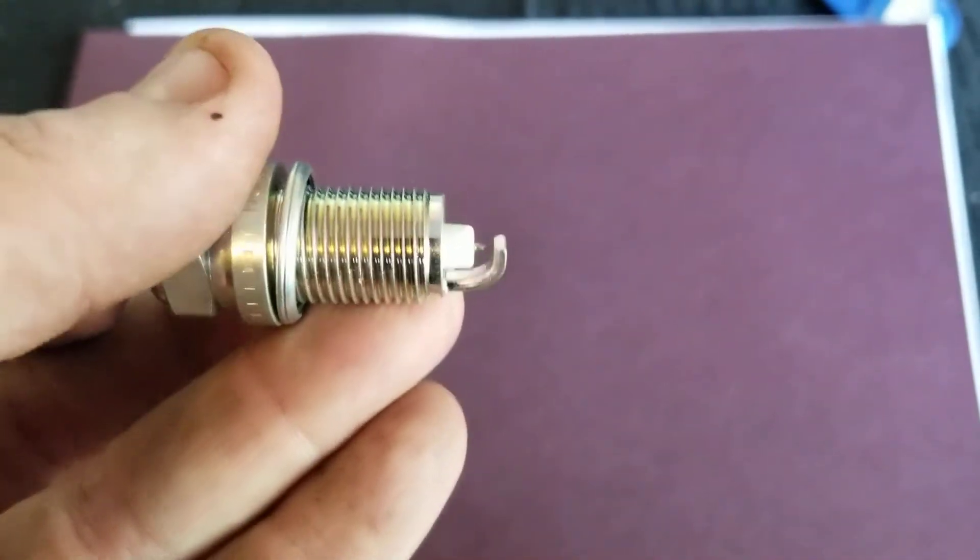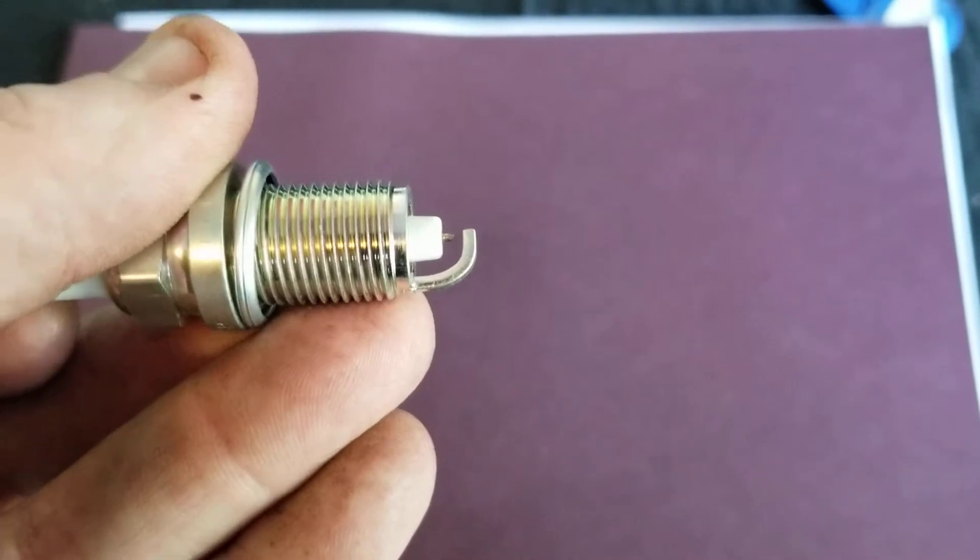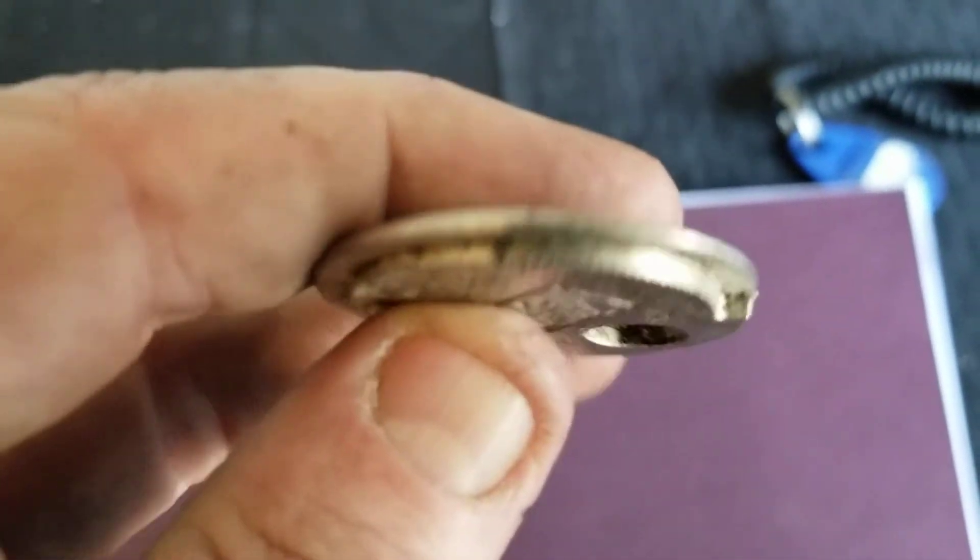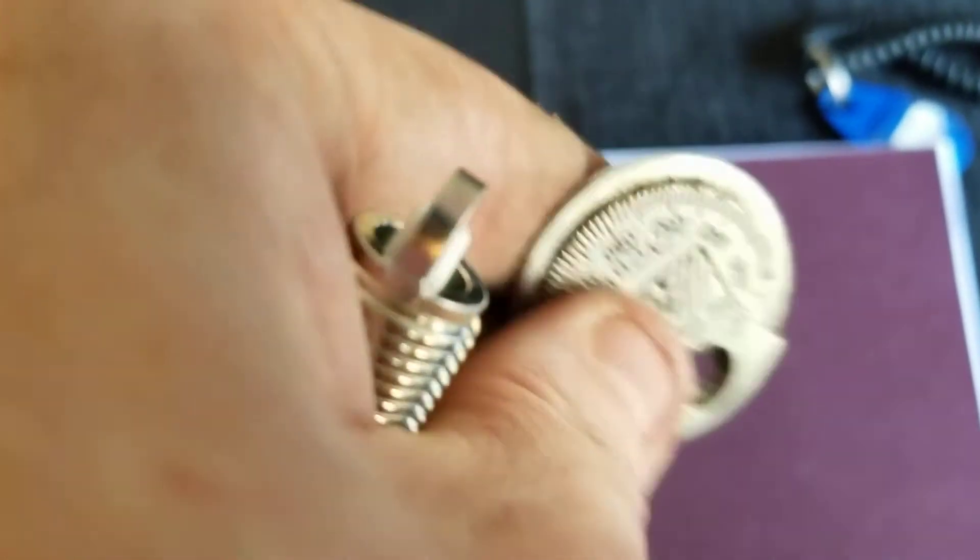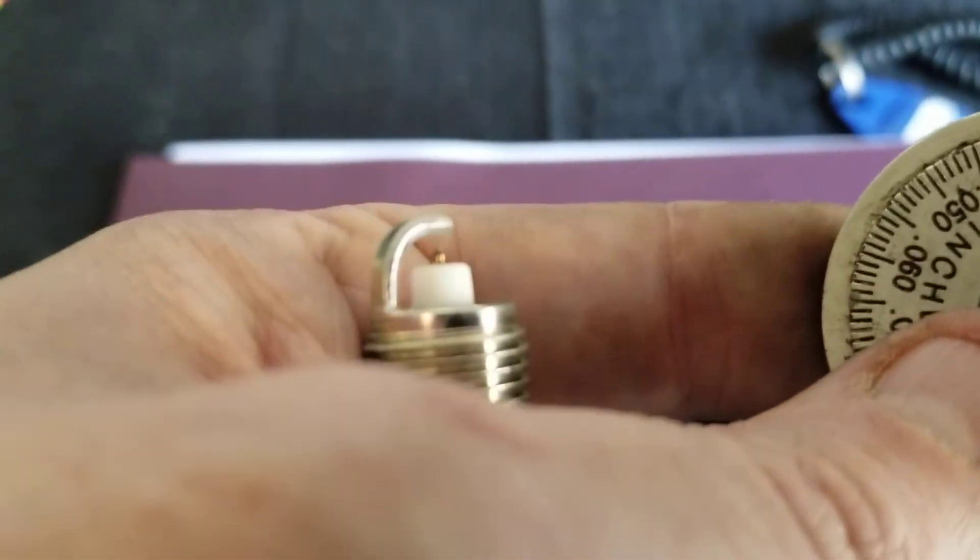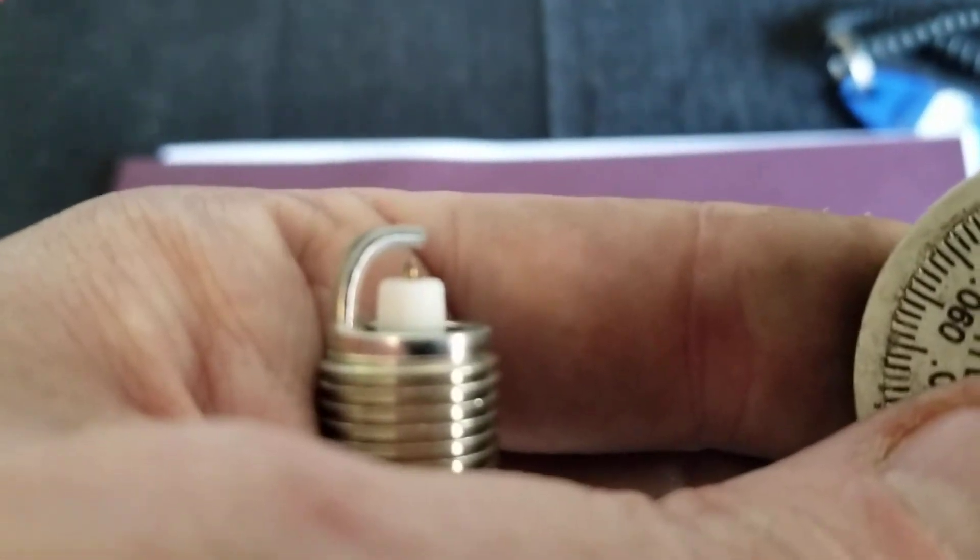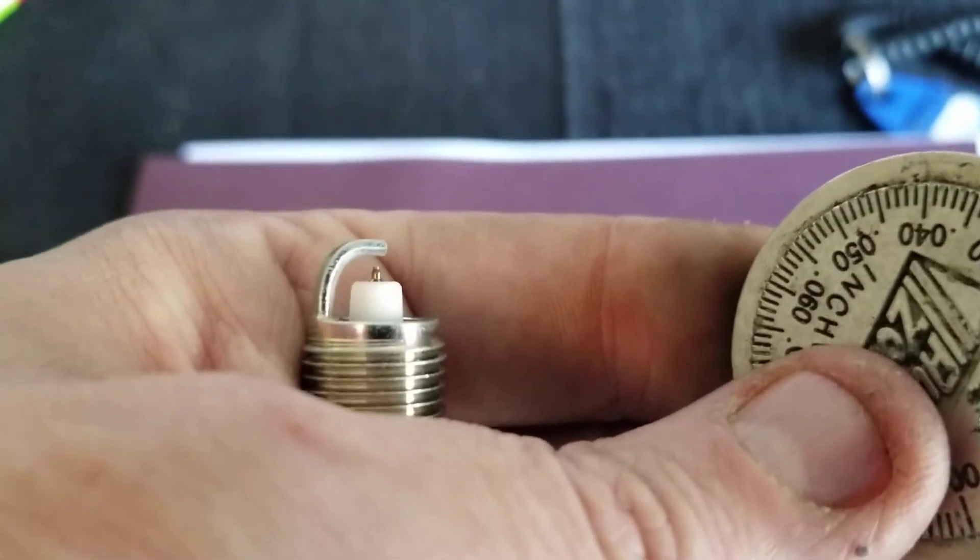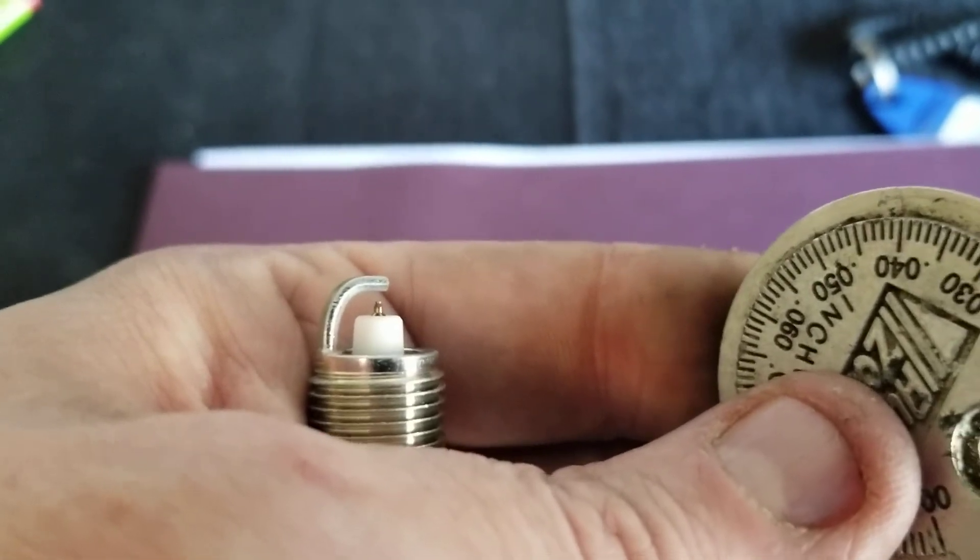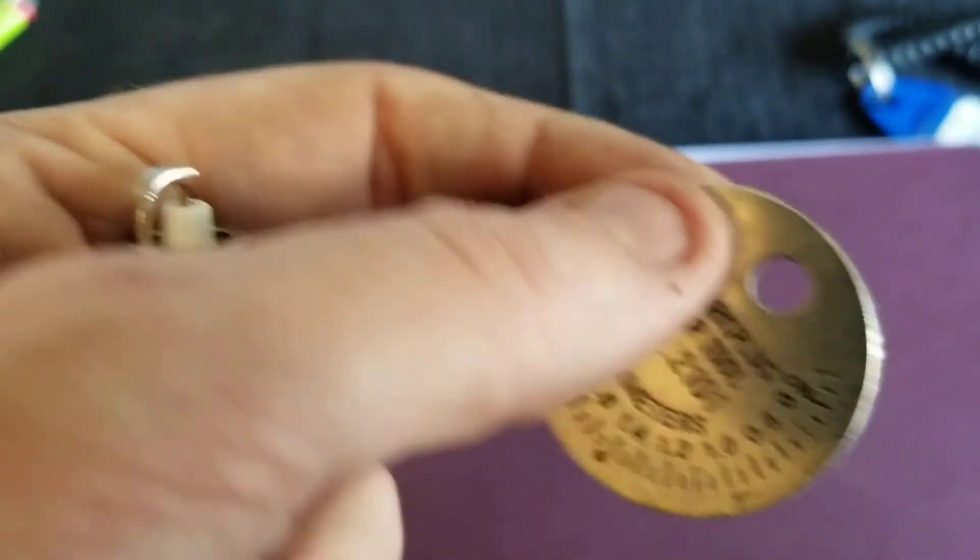I can't hold my phone and gap this at the same time, but what you do is you take this gapper and you slide it in between that spark plug and that little curved part, I don't know exactly what it's called. You insert it in between the igniter and the curved piece of metal.